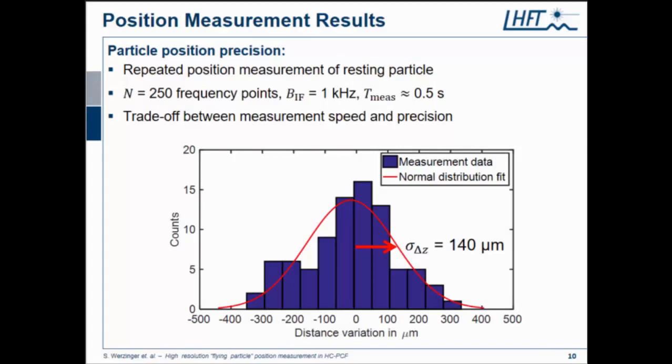Here we used 250 frequency points, and the total measurement time was about half a second. Our standard deviation we received was about 140 microns. There's still some potential to go down really to the particle size dimension, but that was already quite a good result. The problem is there's always some kind of trade-off between the measurement speed and the precision, because if we measure more slowly, then we can average out more.